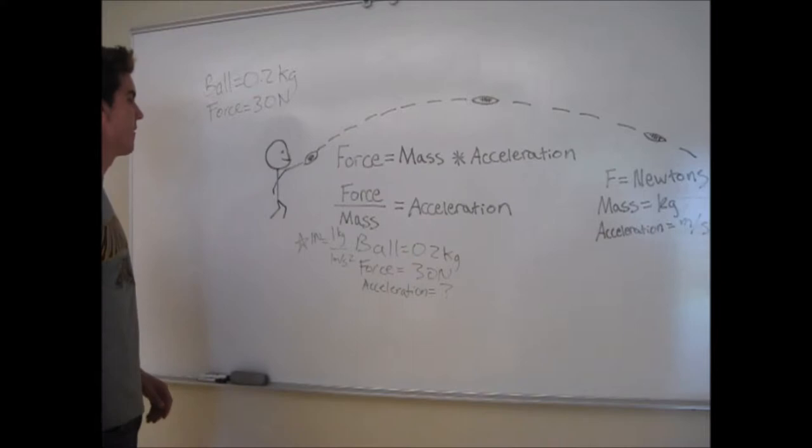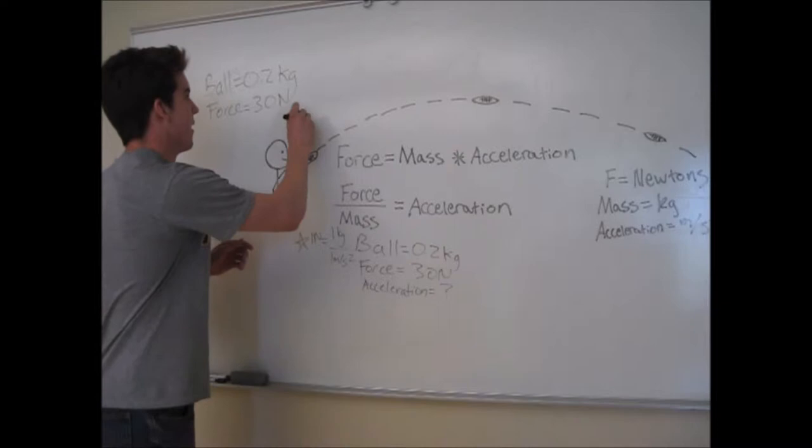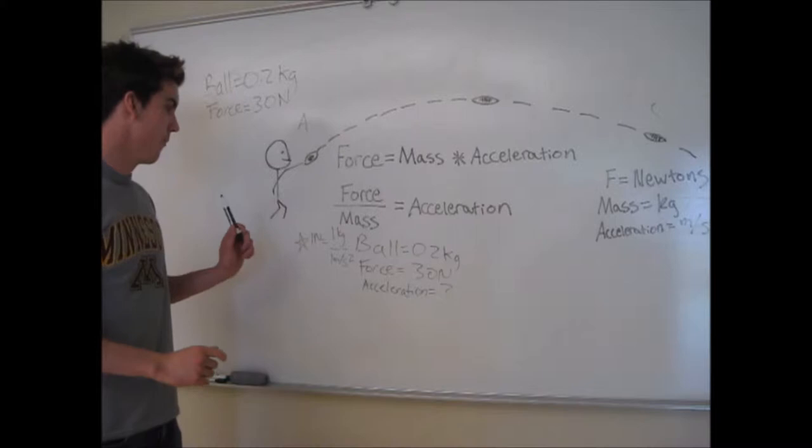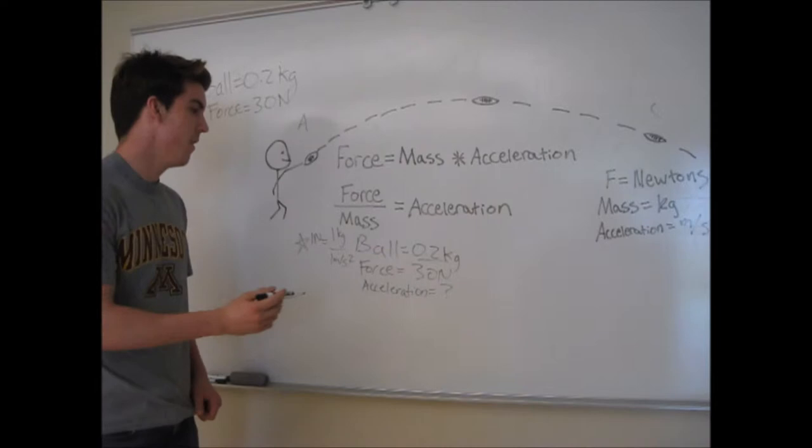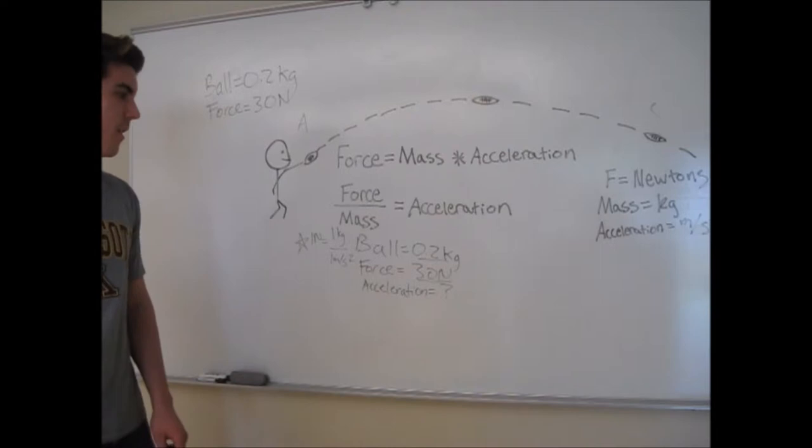We have a nice little stick figure here. We can call this Jack. He's throwing a football from point A here to point C over here. We are saying that the ball is 0.2 kilograms, just in this example problem. The force exerted on the ball is 30 newtons. We're trying to find what the acceleration is.